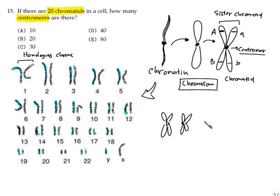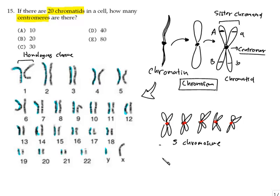Let's work through an example. To know how many chromosomes there are, just look at the center of each one. If I ask how many chromosomes are there — one, two, three, four, five — the answer is simply five chromosomes. Now if I ask how many chromatids, your answer will be double the number of chromosomes, because each chromosome has two chromatids — one on the left side and one on the right side.